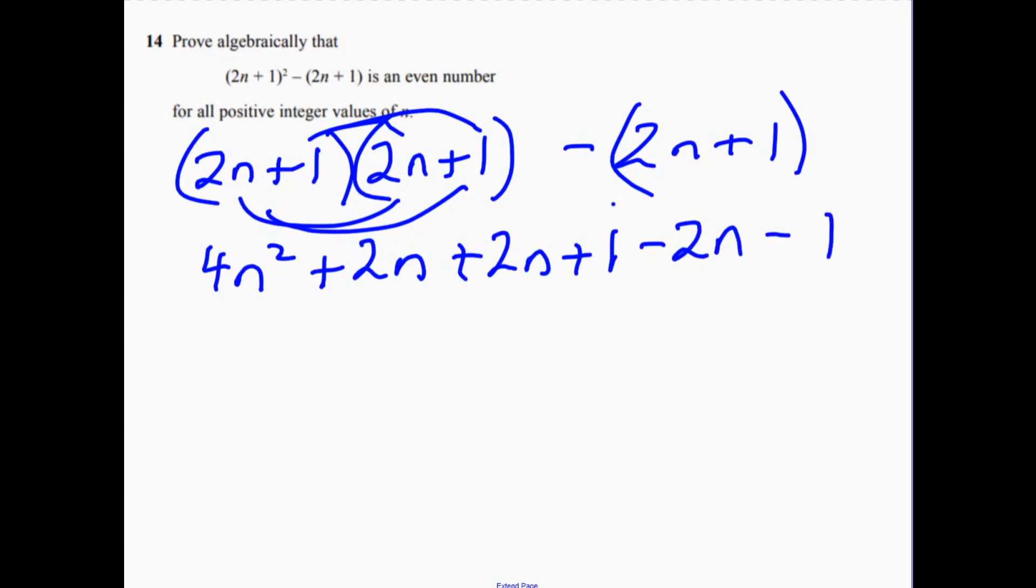Where have we got to now? We're going to have 4n squared plus 2n and everything else is going to cancel out, isn't it? Yeah, that's good. So we get to that stage.